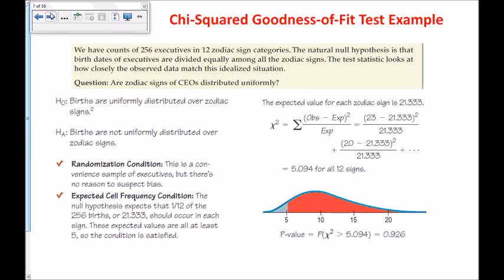Here's a quick example for the chi-squared goodness-of-fit test. We have counts of 256 executives in 12 zodiac sign categories. The natural null hypothesis is that birth dates of executives are divided equally among all zodiac signs — it should be uniform across zodiac signs. The question is: are zodiac signs of CEOs distributed uniformly? The null hypothesis written in words: births are uniformly distributed over zodiac signs. The alternative: births are not uniformly distributed over zodiac signs.